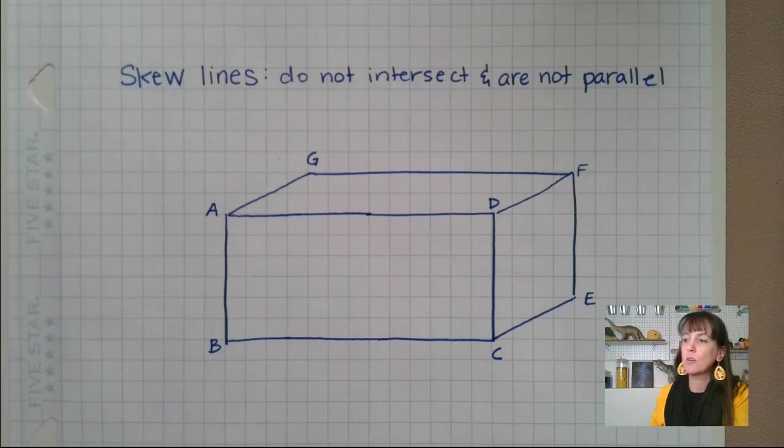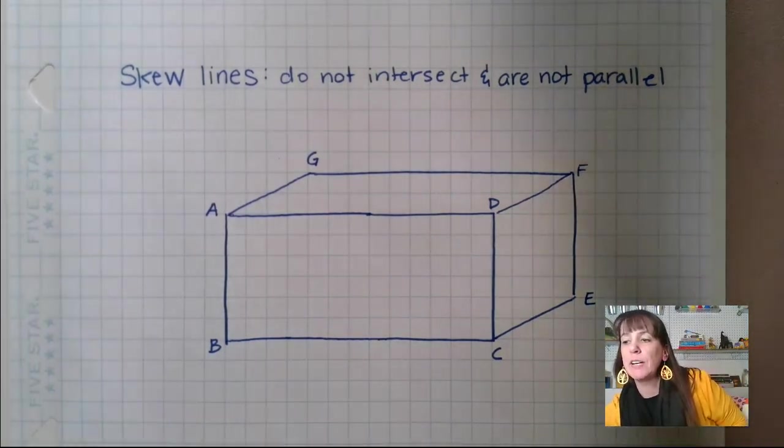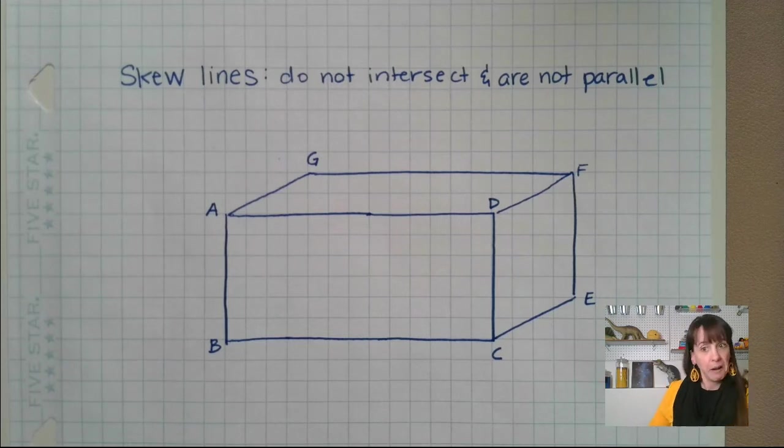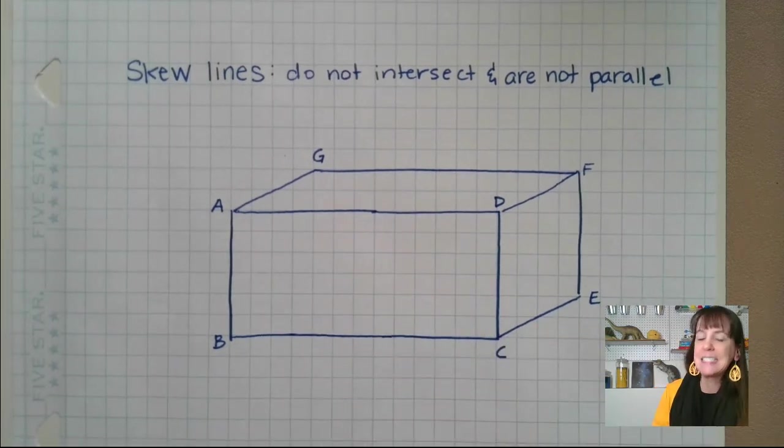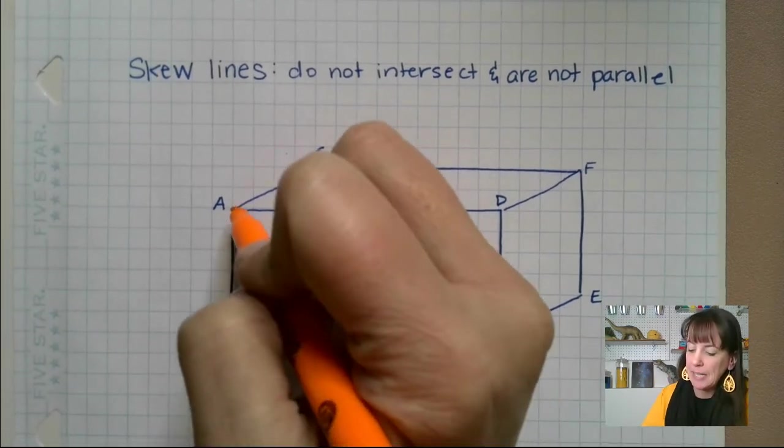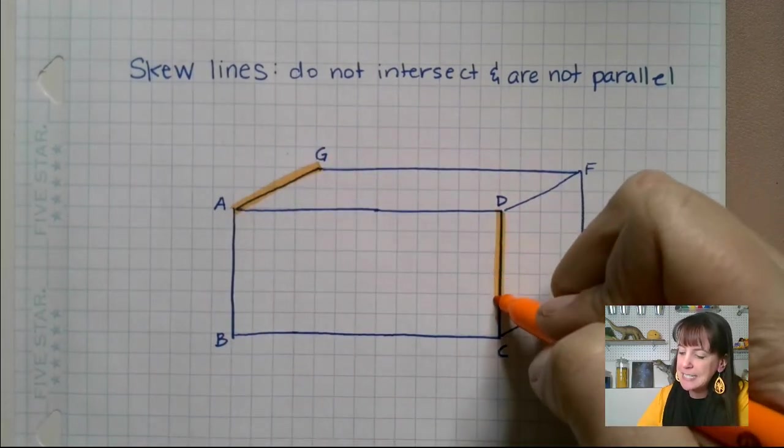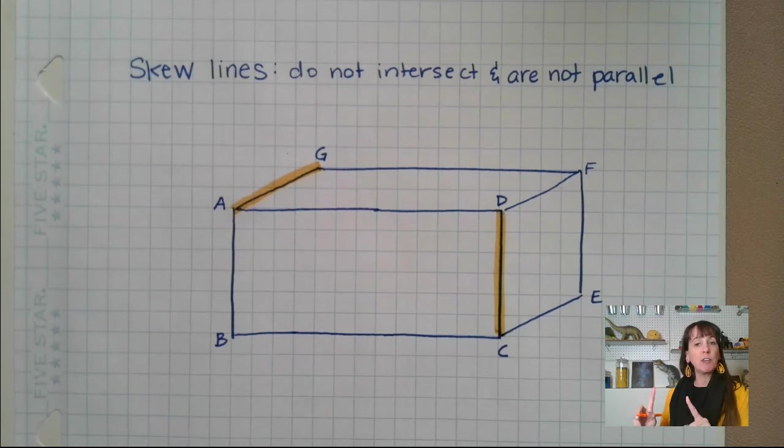So if you're looking at this figure that I've got here - rectangular, rectangular prism, words are hard today. You can see that an example of skewed lines might be AG is skewed to DC, because those are never going to cross and they are not parallel.